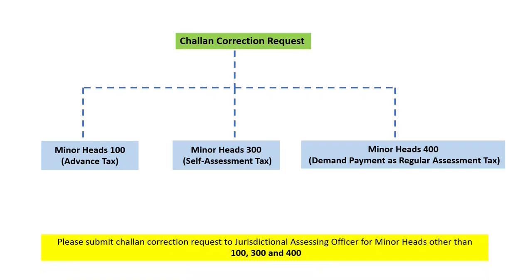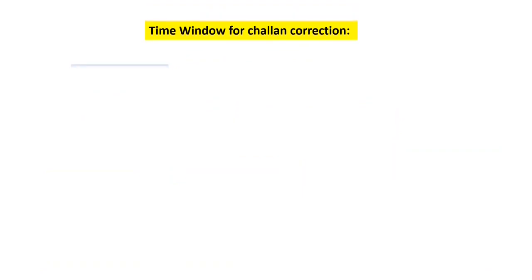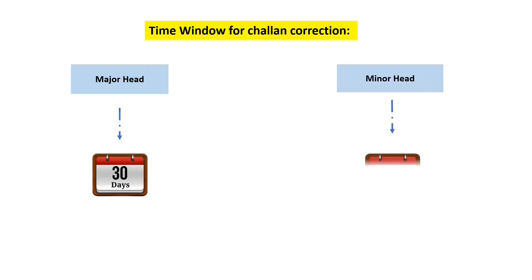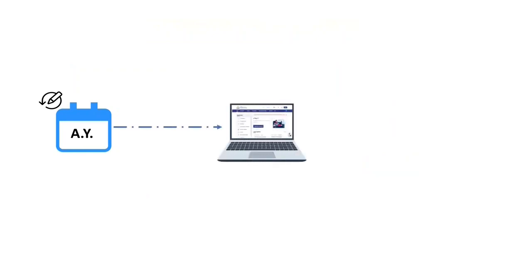It is important to note the time windows for Chalan correction. To change the major head (tax applicable), you can do so within 30 days of the Chalan deposit date. For changing the minor head (type of payment), the time allowed is also 30 days of the Chalan deposit date. For changing the assessment year, you can correct it within seven days of the Chalan deposit date.